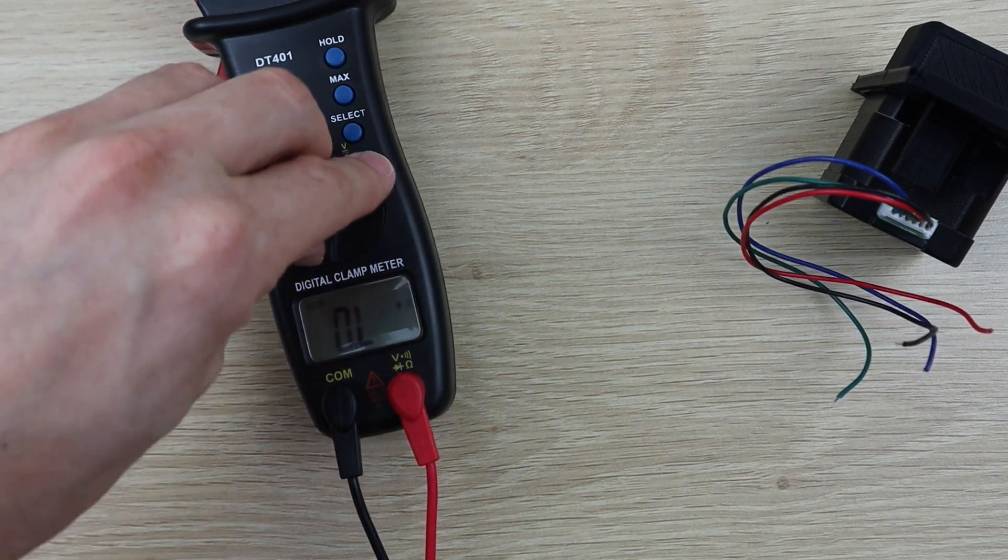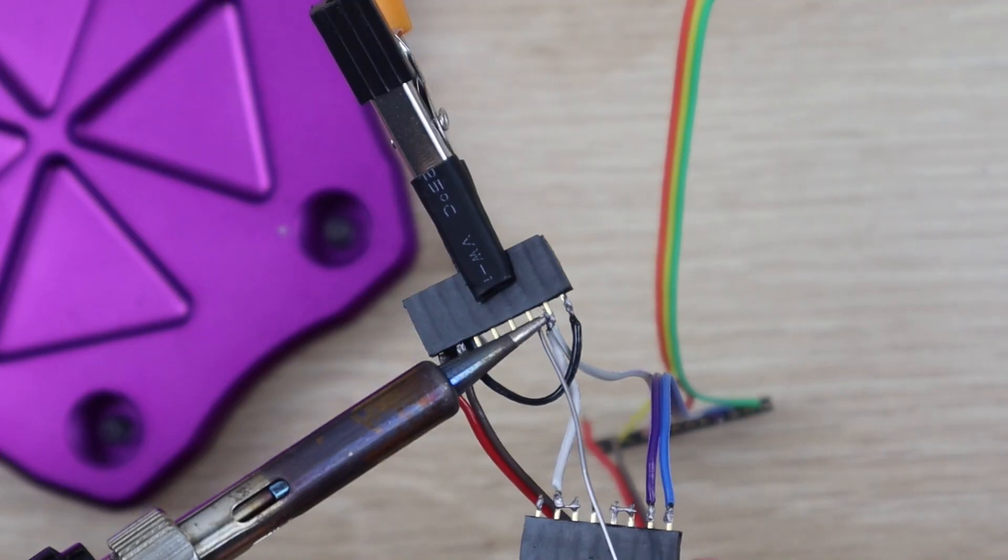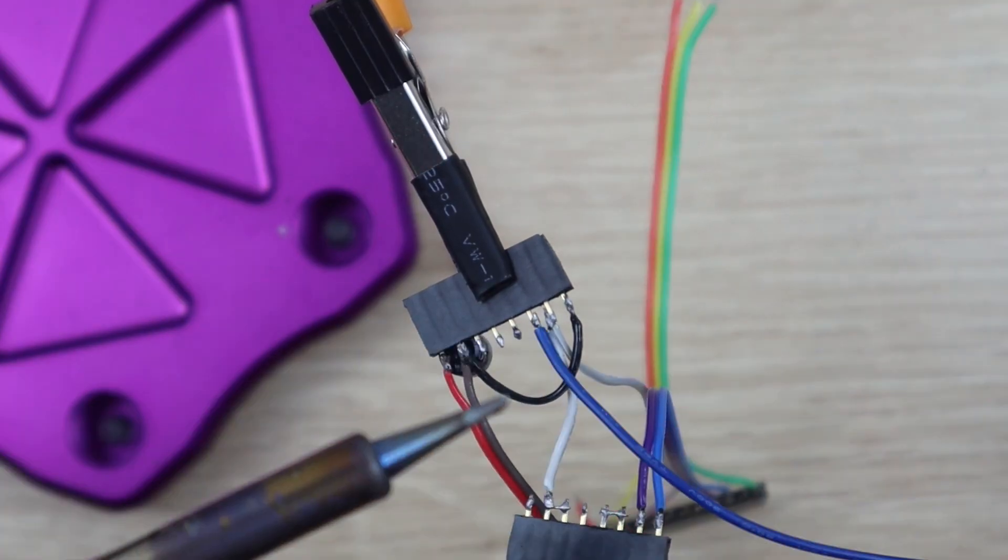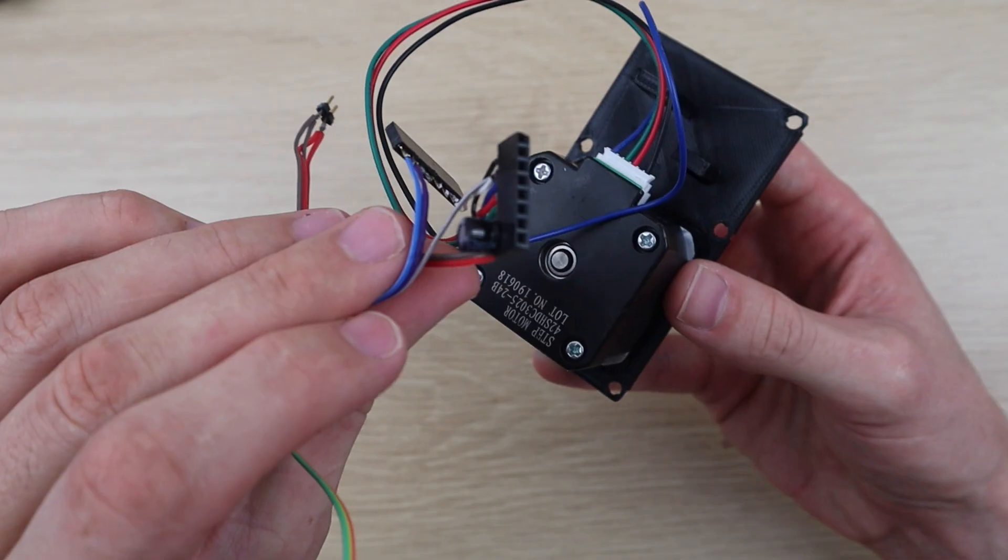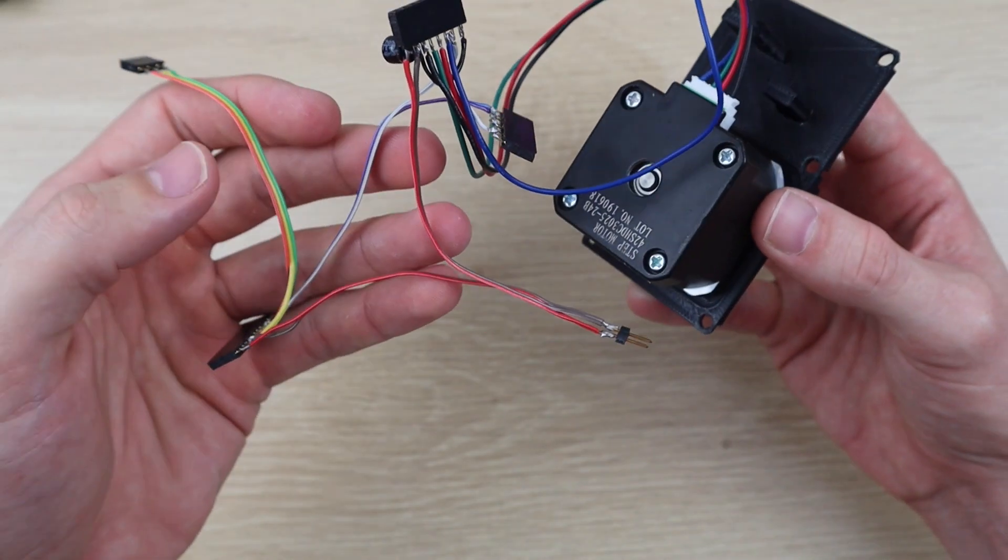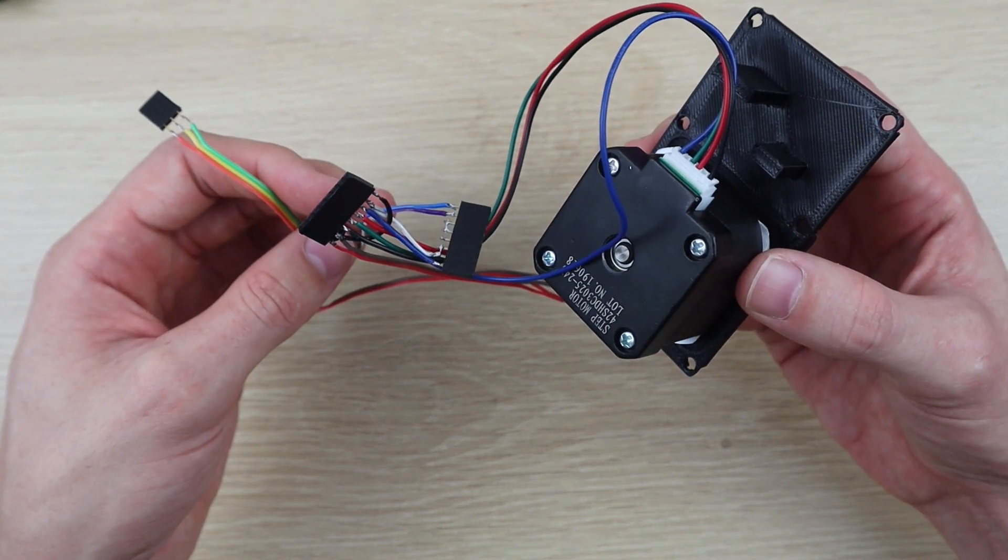On this motor, one coil is connected to the blue and black leads, and the other to the green and red leads. Once your header strips are ready, you should have two strips for your motor driver, one for your Arduino and one for your infrared sensor.